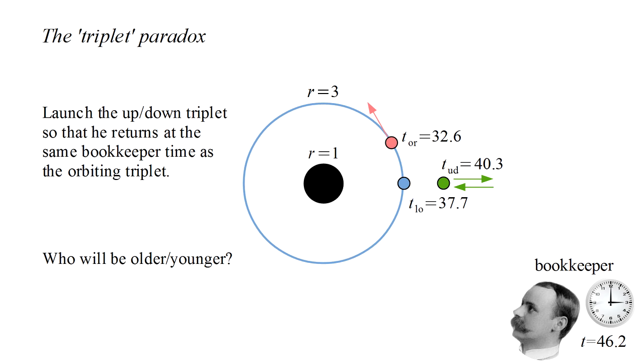Space-time geodesics are paths of longest time rather than shortest distance. We conclude that all space-time paths close to the up-down triplet's path will take less than 40.3 seconds, and all space-time paths close to the orbiting triplet's path will take less than 32.6 seconds. These space-time geodesics are on opposite sides of the hill created by the black hole, so to speak. Because the local observer time is less than the up-down time, but more than the orbiting time, it seems likely that she is on the up-down triplet side of the hill.